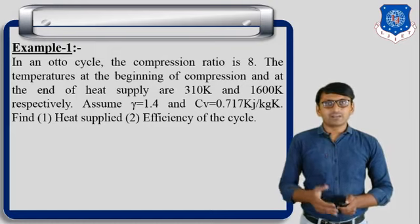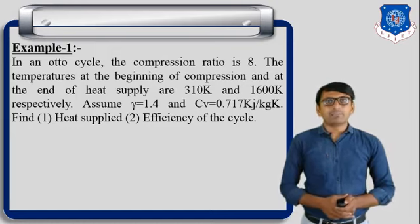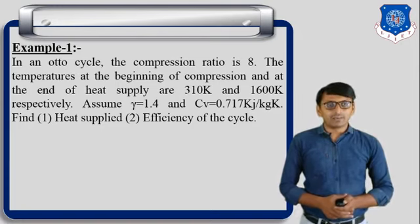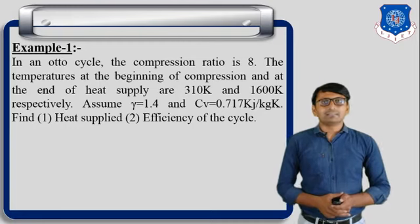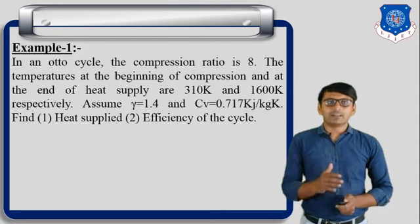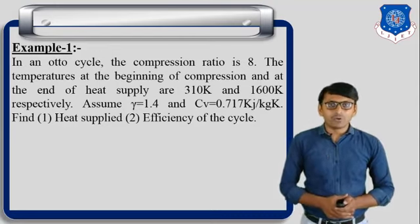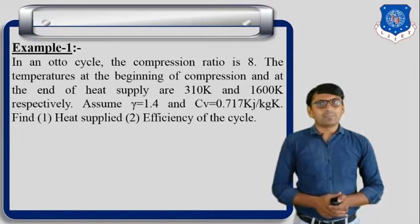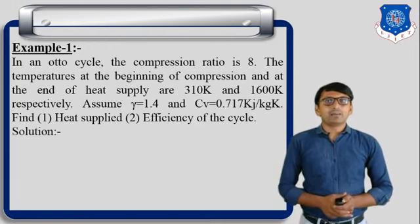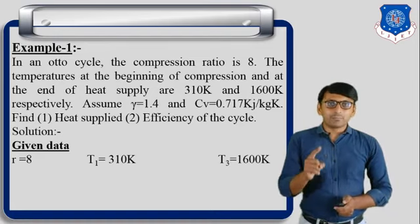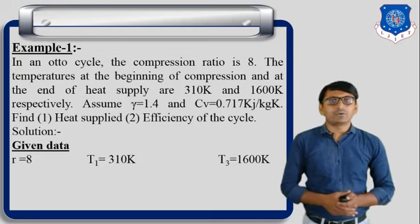In the Otto cycle, the compression ratio is 8. The temperature at the beginning of compression and at the end of heat supply are 310 Kelvin and 1600 Kelvin respectively. Assume gamma is equal to 1.4 and Cv is equal to 0.717 kilojoule per kg Kelvin. Find out heat supply and efficiency of the cycle.